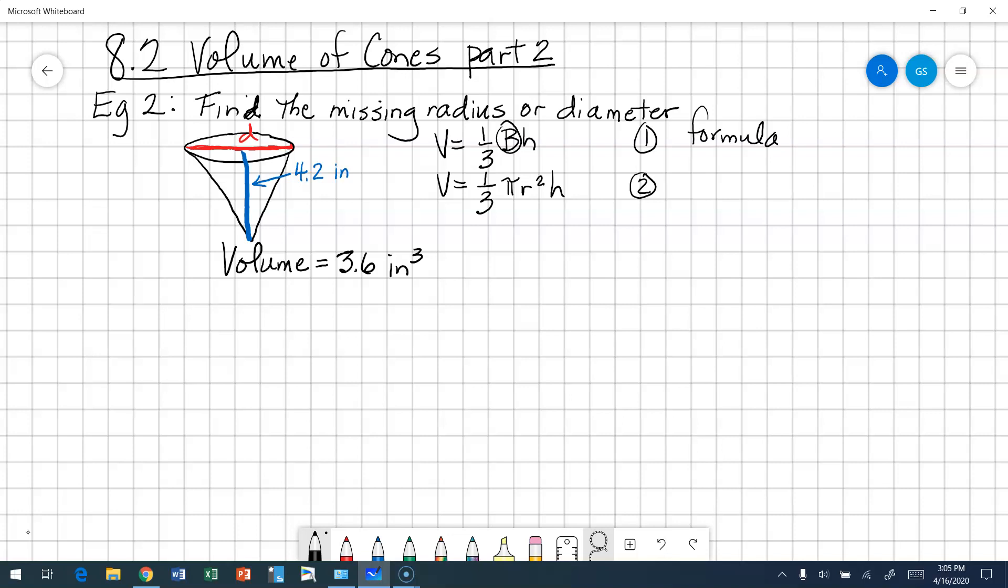Because we're talking about a cone which has a circular base, we're going to replace the area of the base with pi radius squared times height. Next step, we're going to figure out what are our facts that we know. Do we know height? And the answer is yes, the height is 4.2 inches.